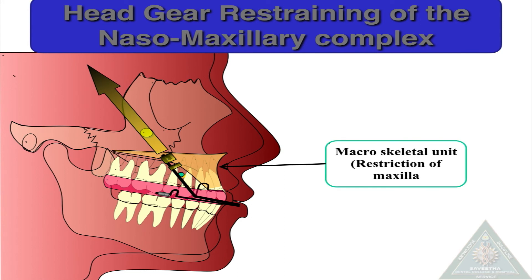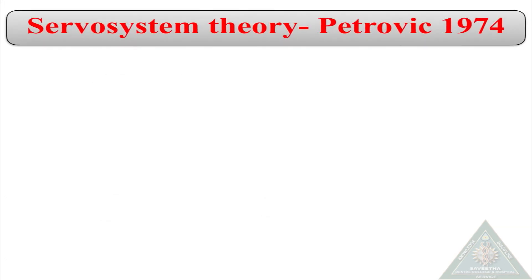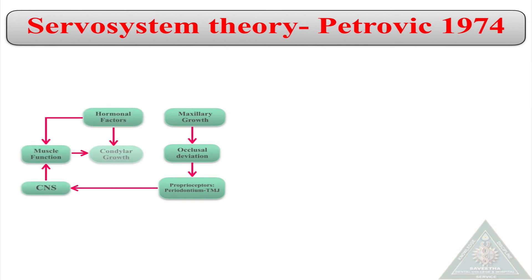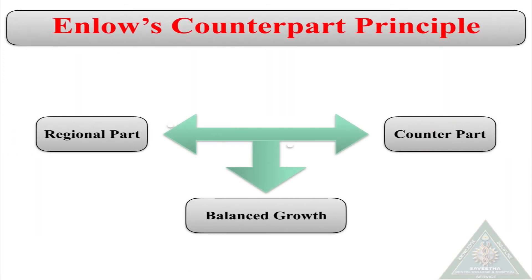The servosystem theory states that a stimulus produces an effect, which is measured by neurons; this information is passed to the central nervous system, which produces a modified impulse to regulate the effect. A clinical example is that maxillary growth results in occlusal deviation, which is picked up by proprioceptive impulses in the periodontal ligament and TMJ, producing signals to the CNS that affect muscle function. Hormonal factors also affect muscle function and condylar growth, resulting in deviation in occlusion. Similarly, orthodontic treatment produces a stimulus picked up by the brain, generating proprioceptive signals to the muscles that control the progress of treatment.